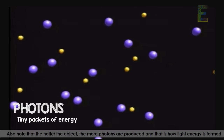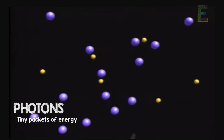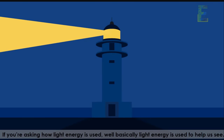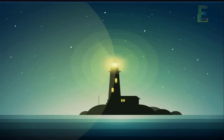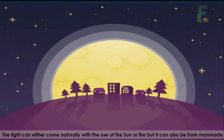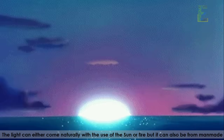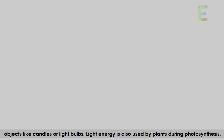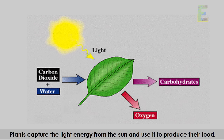Note that the hotter the object, the more photons are produced, and that is how light energy is formed. Light energy is used to help us see. Light can come naturally from the Sun or fire, or from man-made objects like candles or light bulbs.